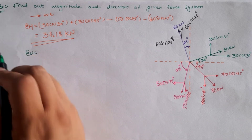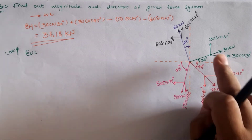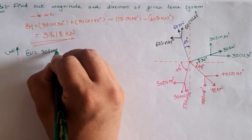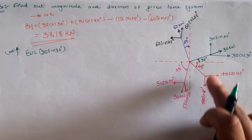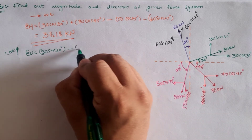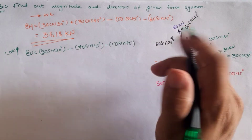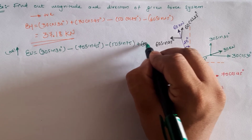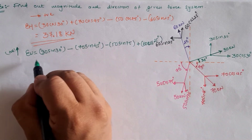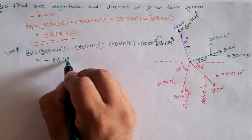For sigma V, we assume the positive y-direction as positive. The component 30 sin 30 is upward (positive), 70 sin 45 is downward (negative), 50 sin 75 is downward (negative), and 60 cos 25 is upward (positive). Summing all these values, sigma V equals minus 28.42 kilonewtons.